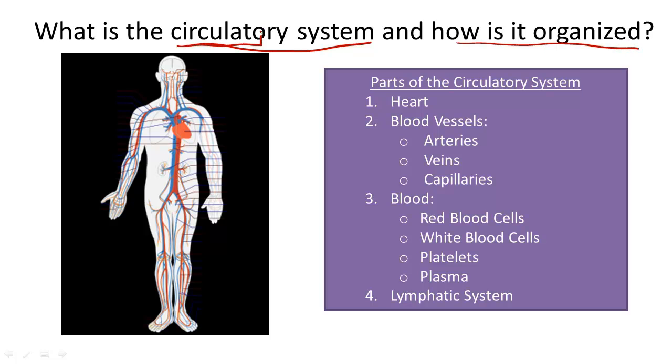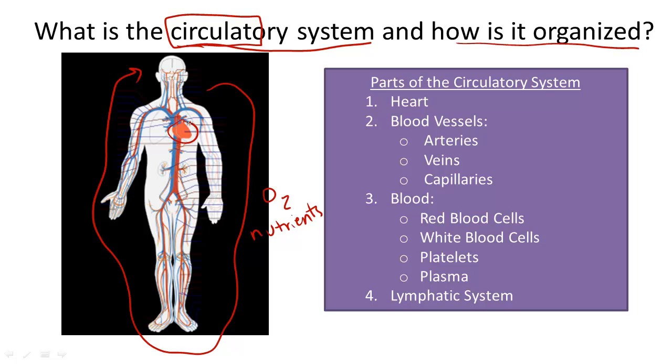When you think of the circulatory system, think of the word circulate. The circulatory system transports valuable oxygen and nutrients around the body for use by all cells. It's sort of like a river transport system with a very strong pump in the center.